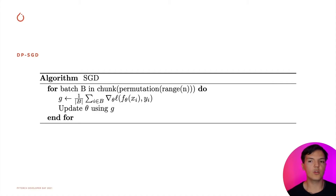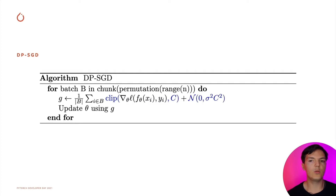In the next slide, we're going to see how we can make Stochastic Gradient Descent, or SGD, differentially private. SGD iterates through all elements of the training sets grouped by batches. At each step, we compute the average gradient over the batch and use it to update the model. To make SGD differentially private, we need to change four things. First, we need to clip individual gradients to a maximum norm of C. Second, we need to add Gaussian noise to the resulting average gradient. But to do that, we need access to individual gradients, which is not efficient by default in PyTorch — so in Opacus, we implement an efficient version of this.